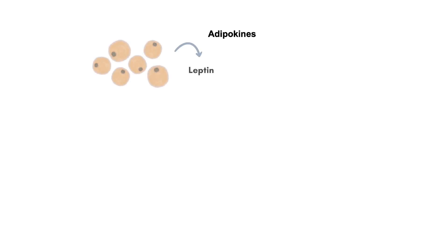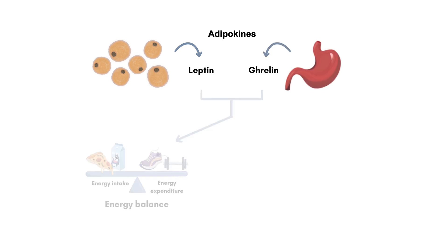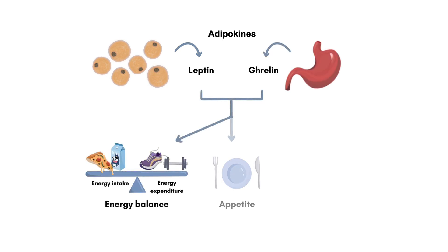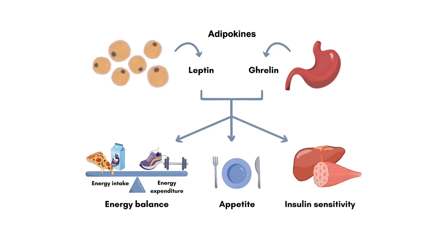Some of these adipokines, like leptin, which is produced by adipocytes, and ghrelin, which is produced primarily by the stomach, play a role in regulating energy balance, appetite, and insulin sensitivity. However, in obesity, the normal function of these adipokines may be disrupted, contributing to the development of insulin resistance and inflammation.